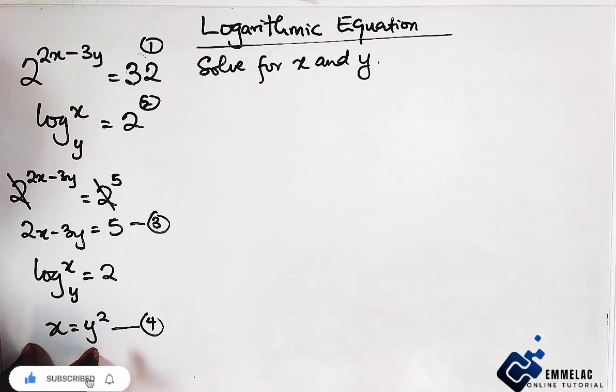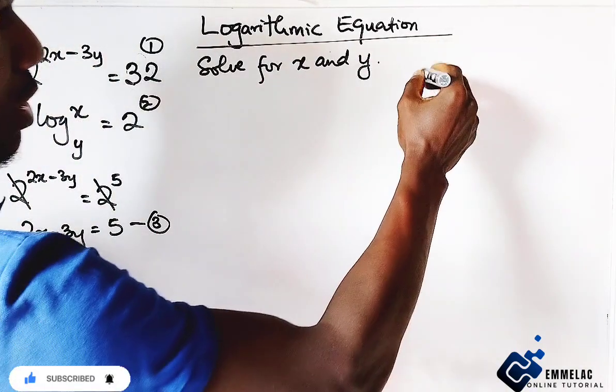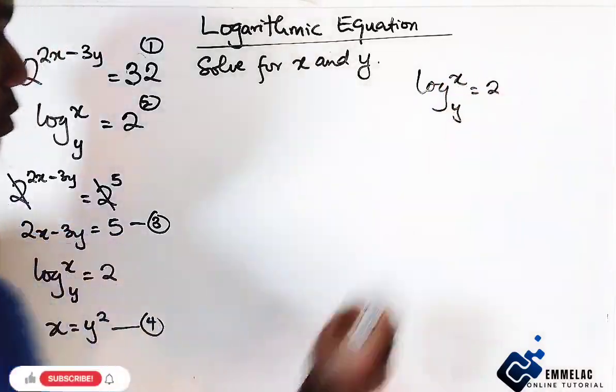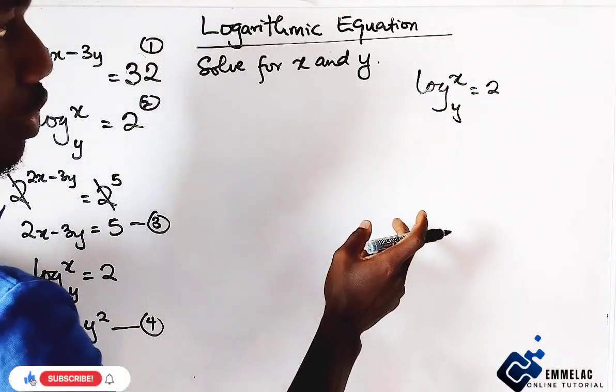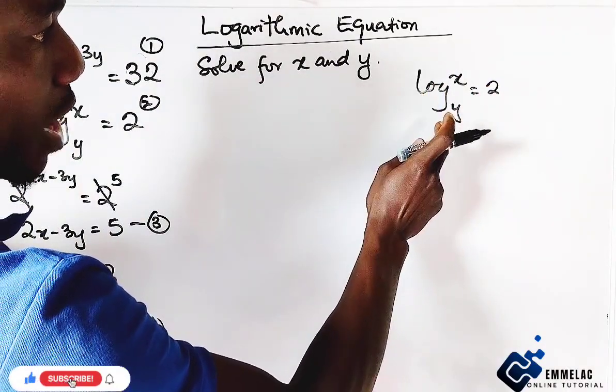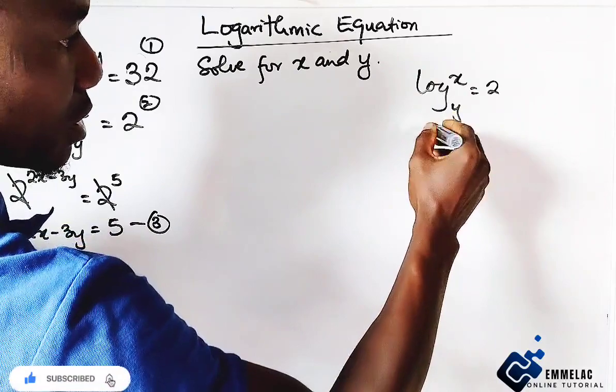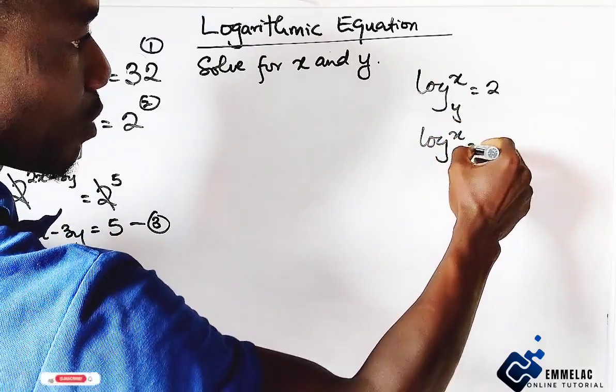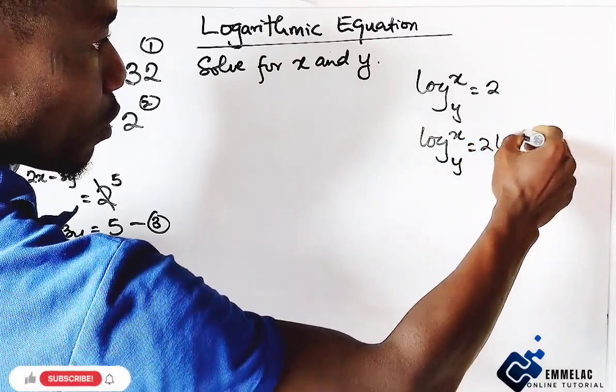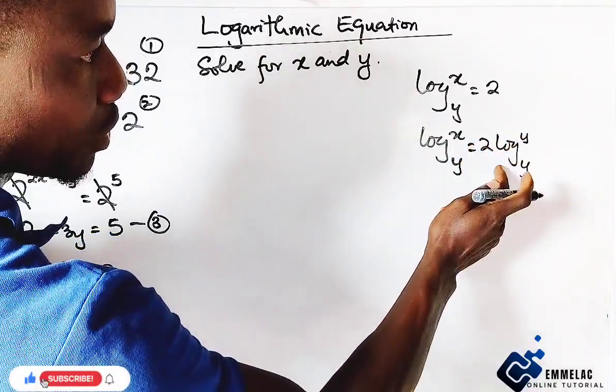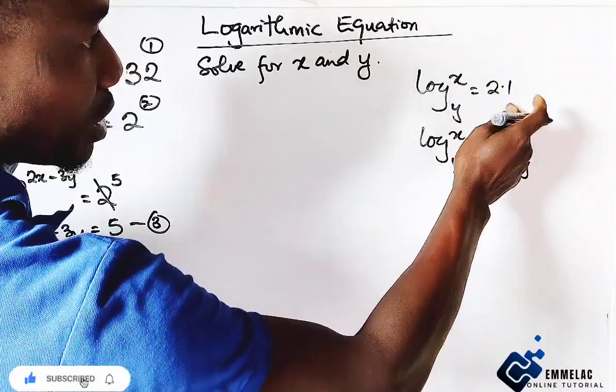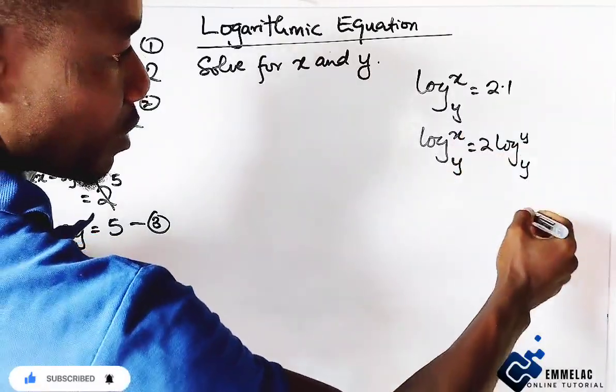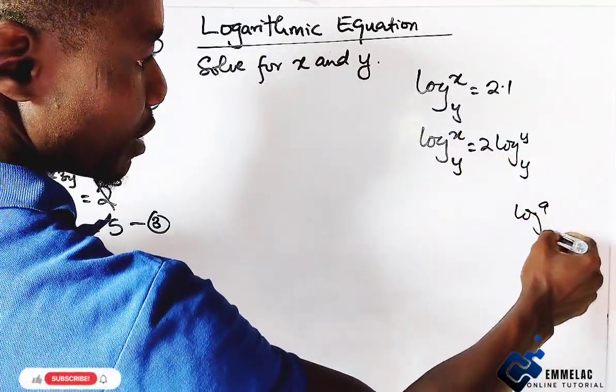There's somebody might be asking, how do I do this? We have log x base y equals 2. What we're going to do is introduce log y base y on the left hand side. We have x base y equals to 2 log y base y. And you might be asking why I introduce this. Take note, this is 2 times 1 since it's just a whole number. We know that according to the law of log reading, log a base a equals 1.